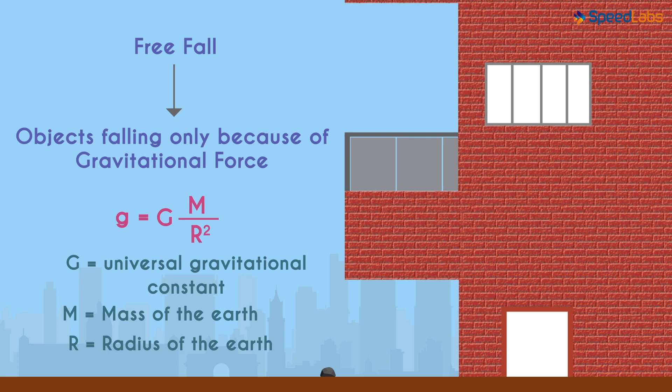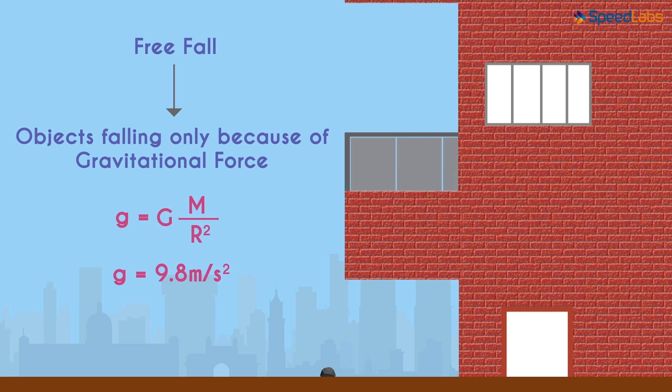So for the specific case of objects close to the earth, we get the value of g as 9.8 meters per second squared. But do you know what's interesting? This acceleration is not dependent on the object's mass. This M is the mass of the earth, not the object.